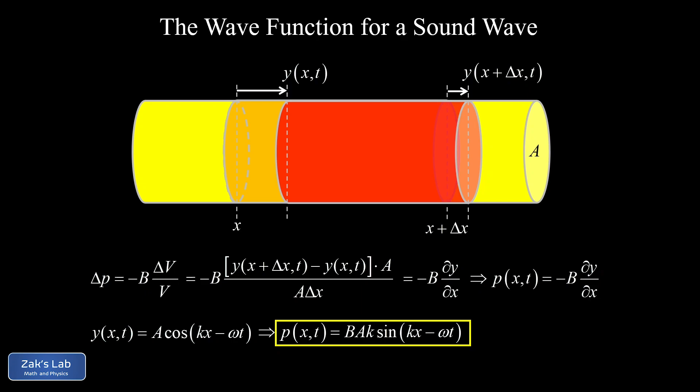We can now precisely describe a sinusoidal pressure wave — a sound wave playing a pure tone. A quick corollary of this result is that the pressure amplitude, the maximum pressure, equals B times A times k. So there is a concise formula relating the pressure amplitude to the displacement amplitude A — the actual physical wiggling of the air molecules — and that formula is exactly what we need to work the example on the next slide.